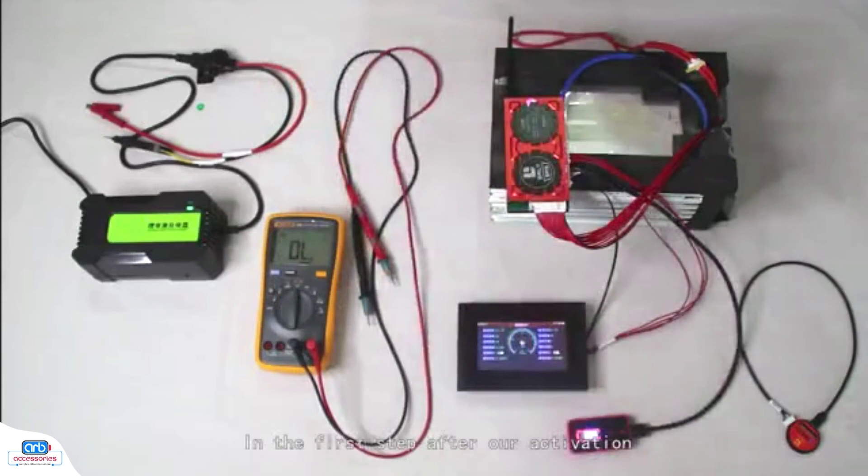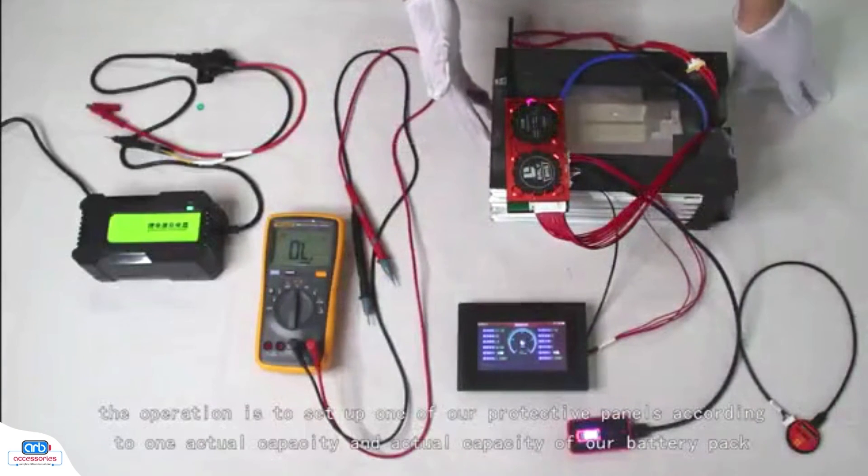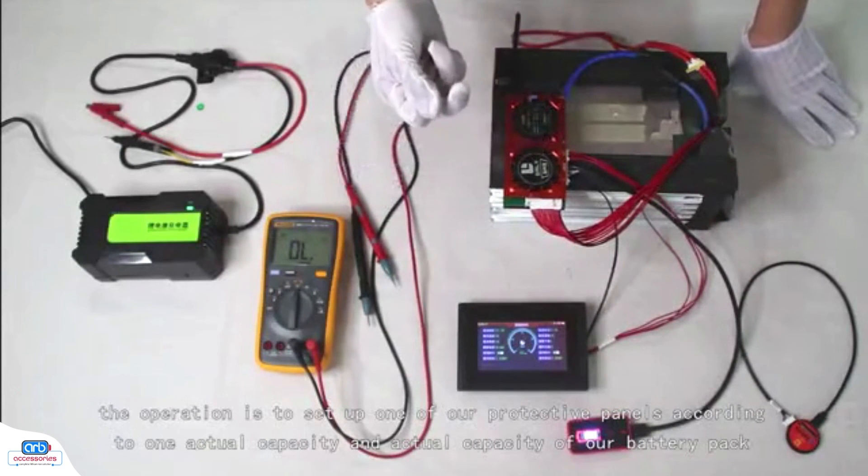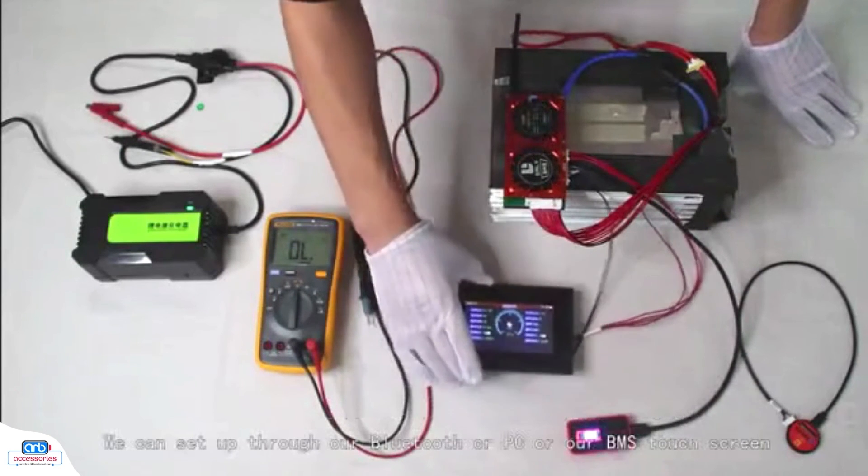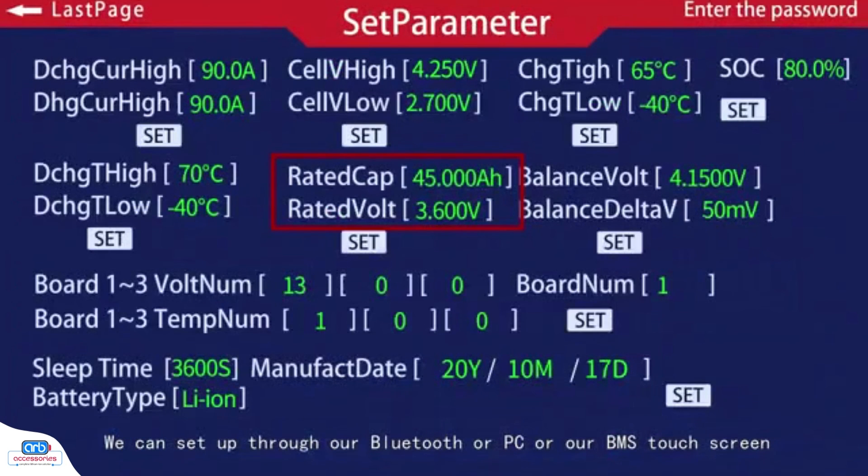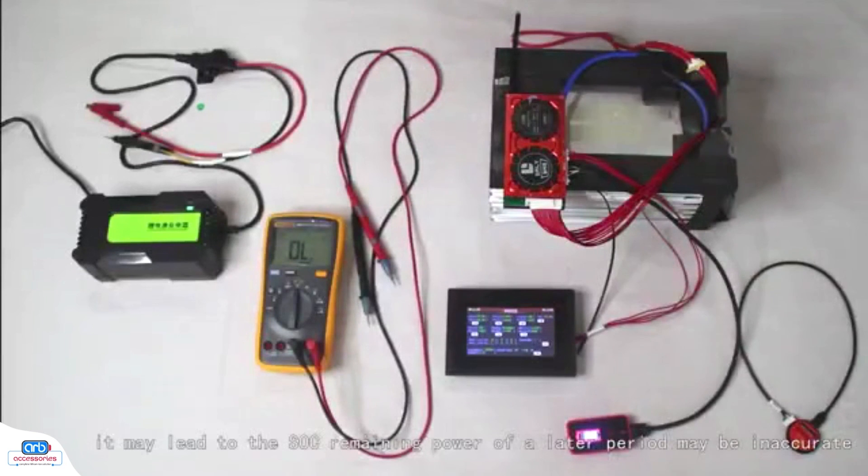The first step after our activation is to set up one of our protective panels according to the actual capacity of our battery pack. We can set it through our Bluetooth, OPC or our BMS touch screen. If the capacity setting is not accurate, it may lead to the SOC remaining power issues in a later period.